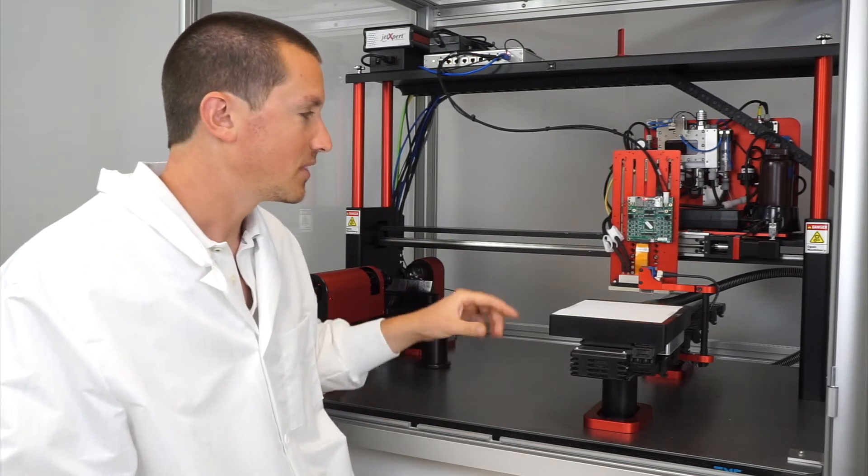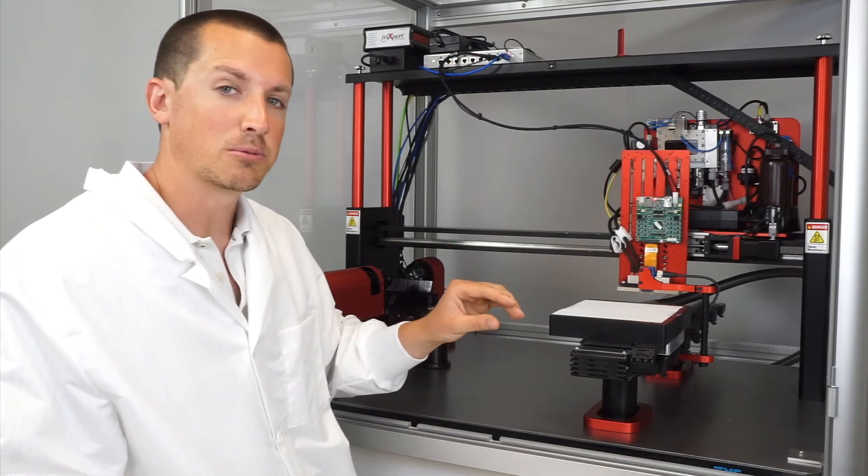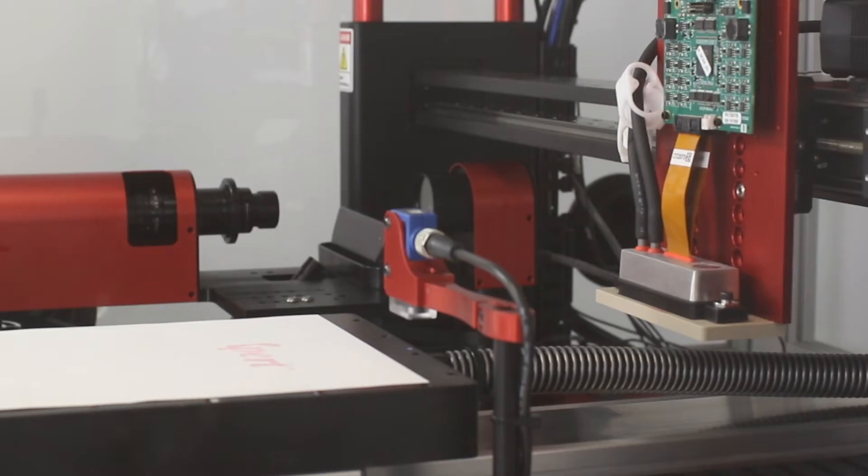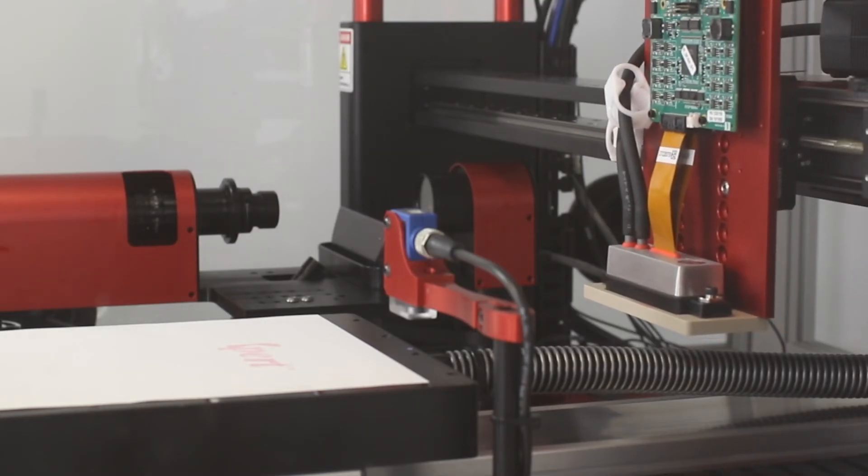For example, in this test, we're going to print each swath at a different speed so you can very quickly compare how all of those prints look.